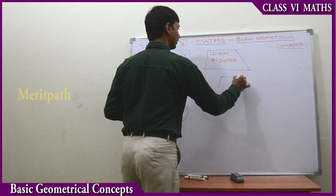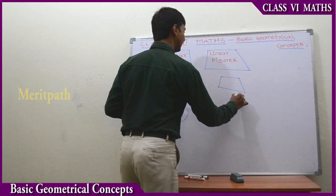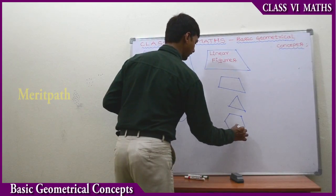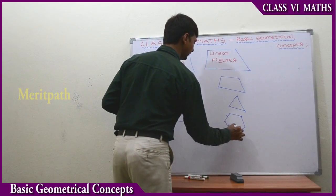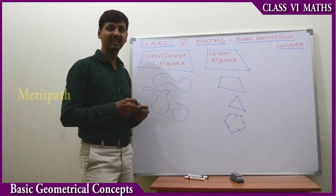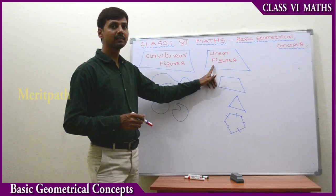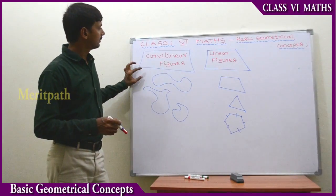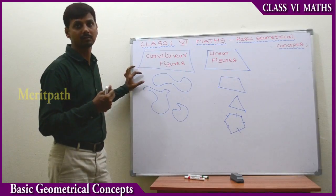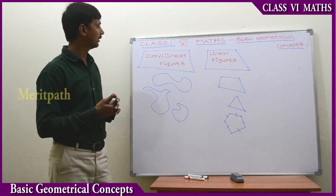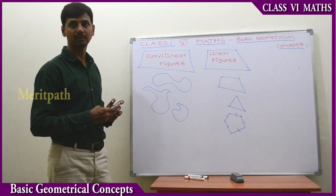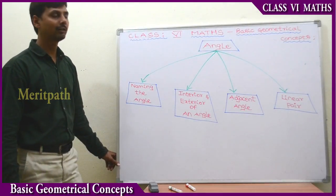For example, quadrilateral, triangle, pentagon, and so on — the figures drawn using line segments we call linear figures. Curved linear figures are drawn with curves. So this is the concept of curved linear figures and linear figures.